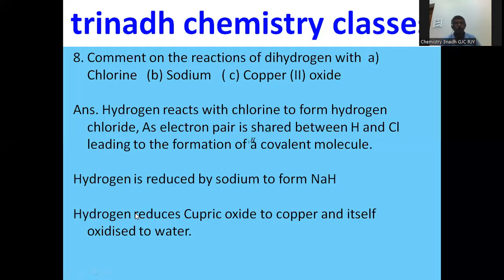Comment on the reactions of dihydrogen with: (A) chlorine, (B) sodium, and (C) copper(II) oxide. Hydrogen reacts with chlorine to form hydrogen chloride — an electron pair is shared between H and Cl, forming a covalent molecule. With sodium, hydrogen is reduced to form sodium hydride, which is an ionic hydride. With copper(II) oxide, hydrogen reduces it to copper and is itself oxidized to water.